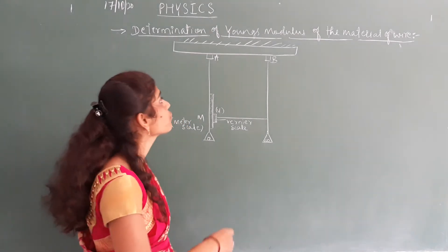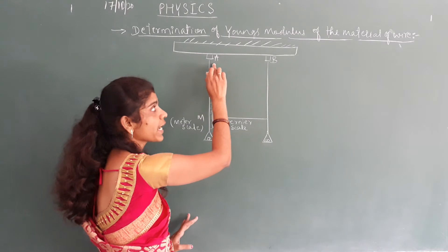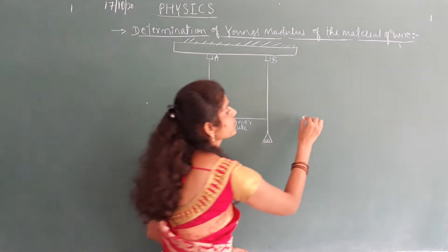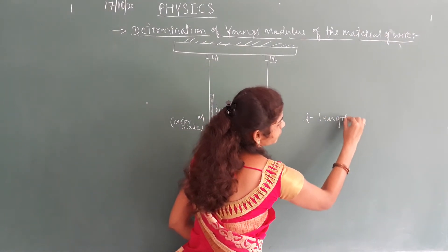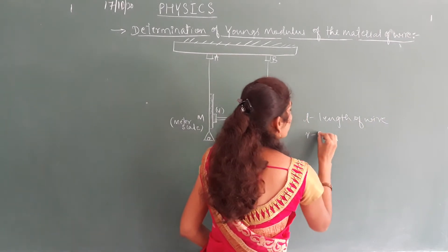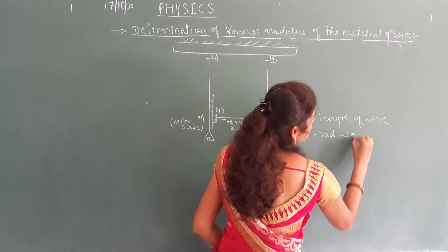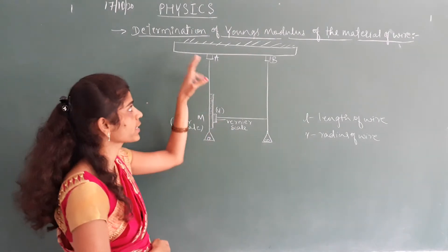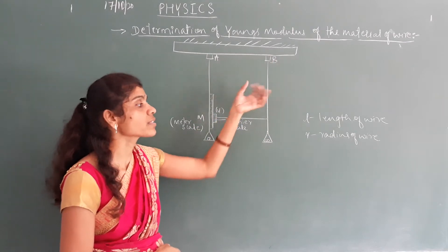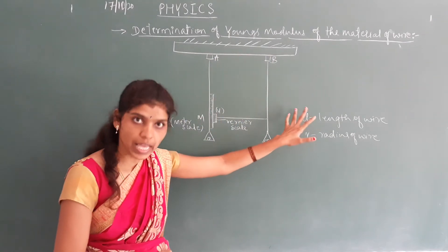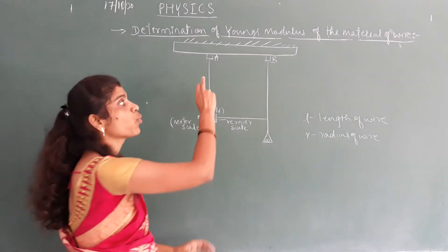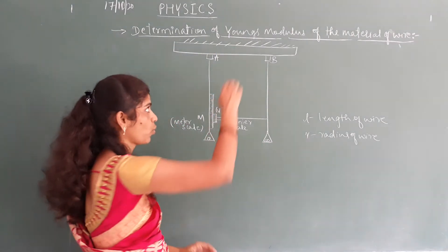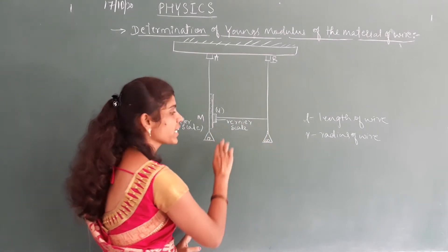The experimental setup consists of two wires — wire A and wire B. Both the wires have length L, where L is the length of the wire and R is the radius of the wire. Both wires are fixed to a rigid support at the top, and at the lower end of both wires, a pan is attached.